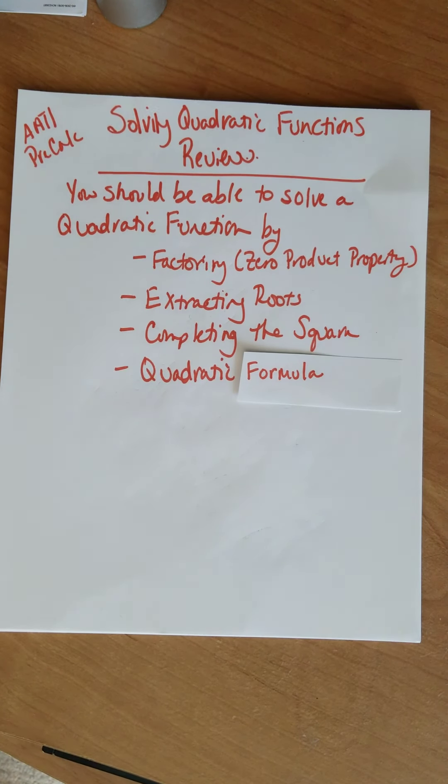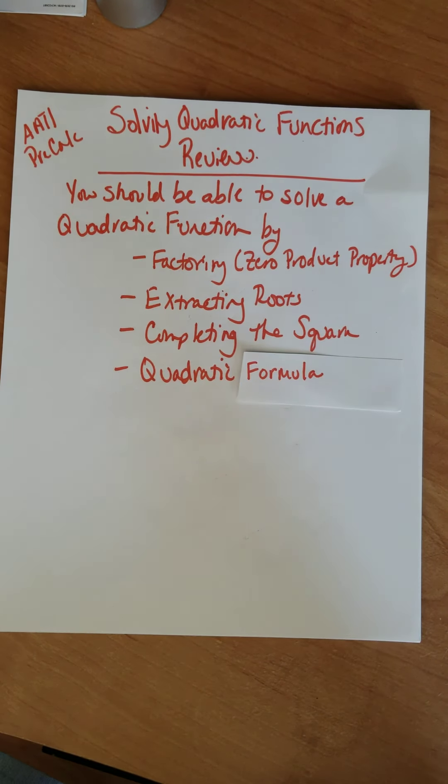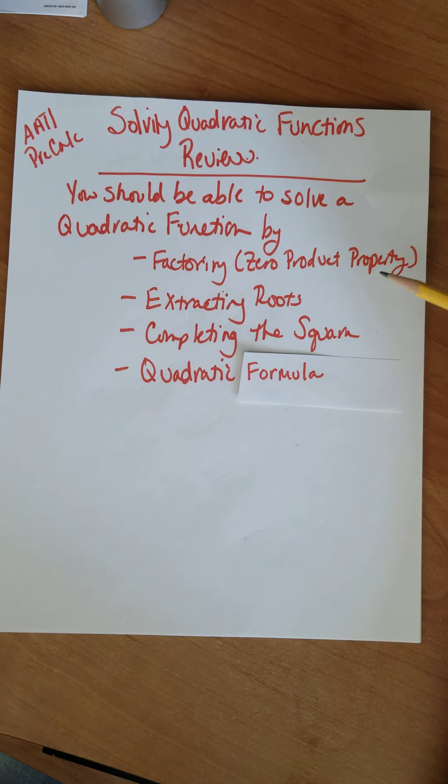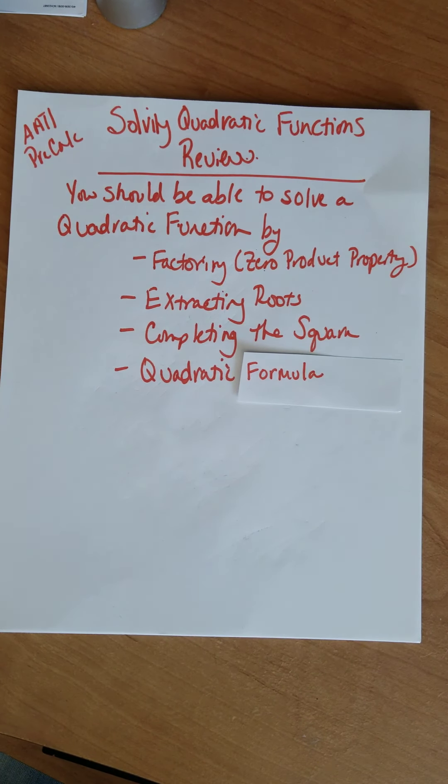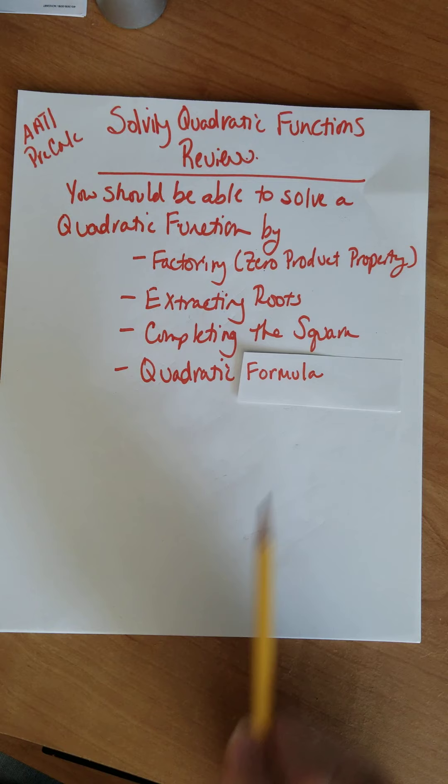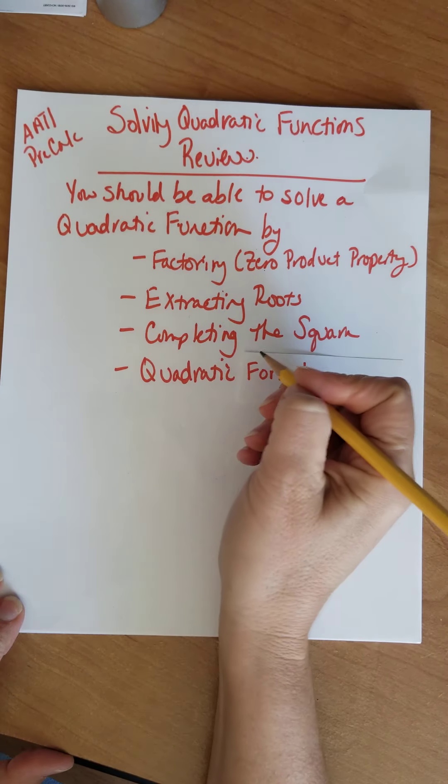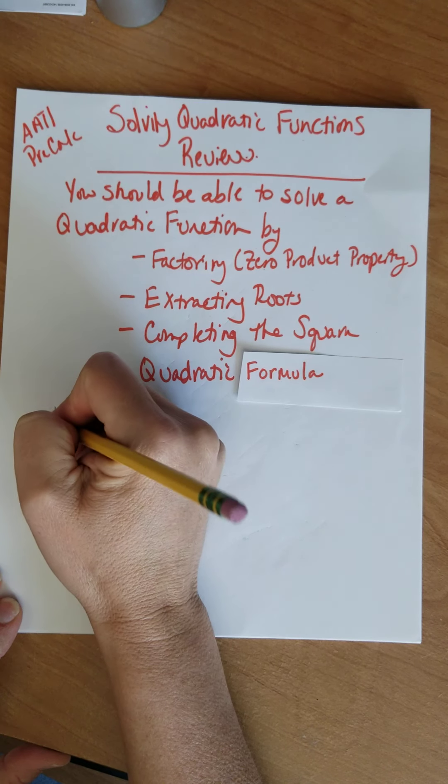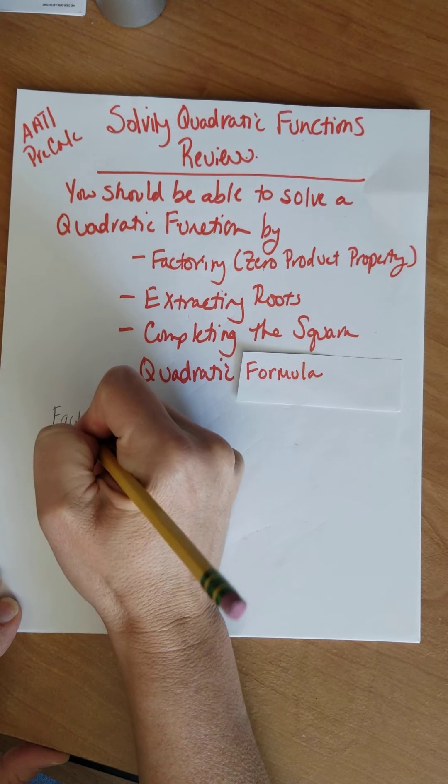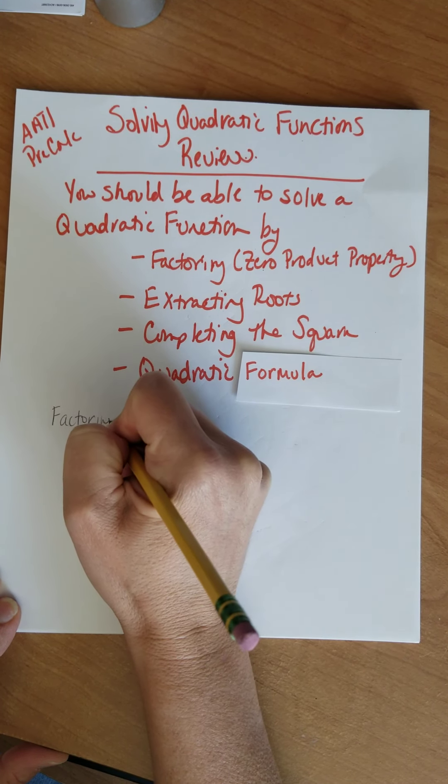All right everybody, this is the advanced elementary pre-calc video on solving quadratic functions. This is a review. By the end of this, we're only going to do four examples today. You should be able to solve a quadratic function by using factoring, that's using the zero product property, extracting roots, completing the square, and using the quadratic formula. So we're going to start from the top, number one, by factoring. So this should all be review.